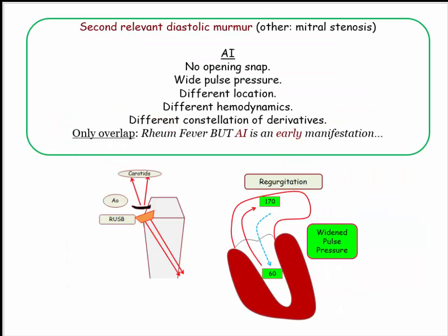Here are the differences between mitral stenosis and aortic insufficiency — the two major diastolic murmurs. Aortic insufficiency has no opening snap, does have a wide pulse pressure, and has a different location and hemodynamic profile. The only remote overlap is with rheumatic fever. Mitral stenosis is a late complication of repeated bouts of rheumatic fever, while acute rheumatic valvulitis may present with aortic insufficiency. Just keep this nugget in the back of your mind.